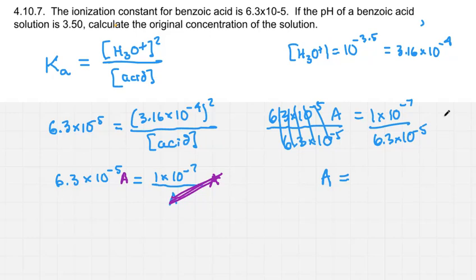1 times 10 to the negative 7 divided by 6.3 times 10 to the negative 5 gives 0.001587. And this is a concentration, so it should be moles per liter. And for sig figs, this only has two, the pH had two, so I'd have to trim this down to 0.0016 moles per liter.